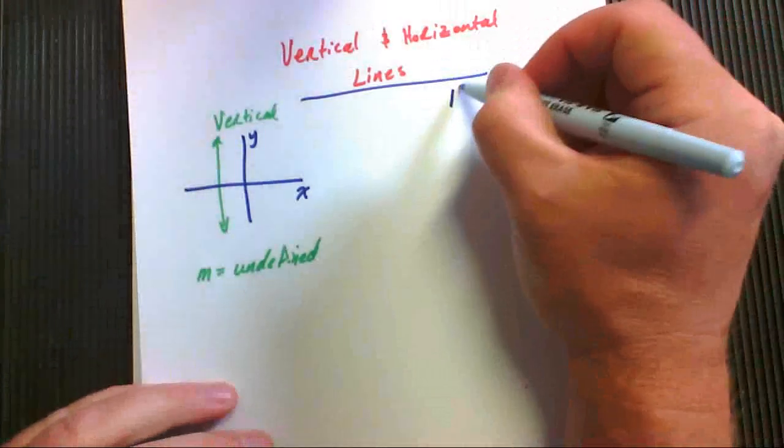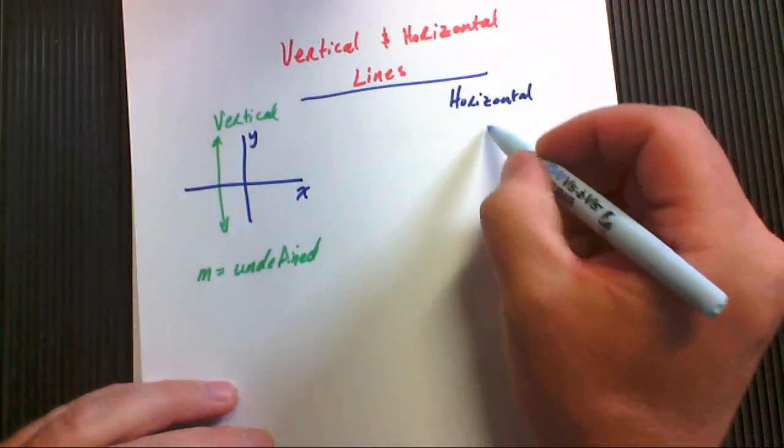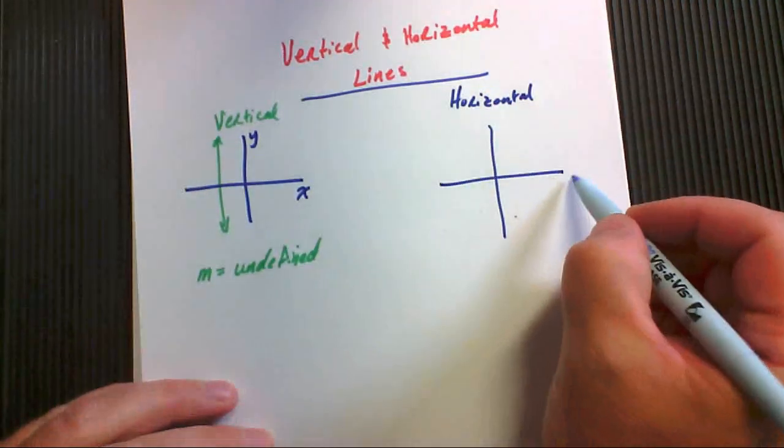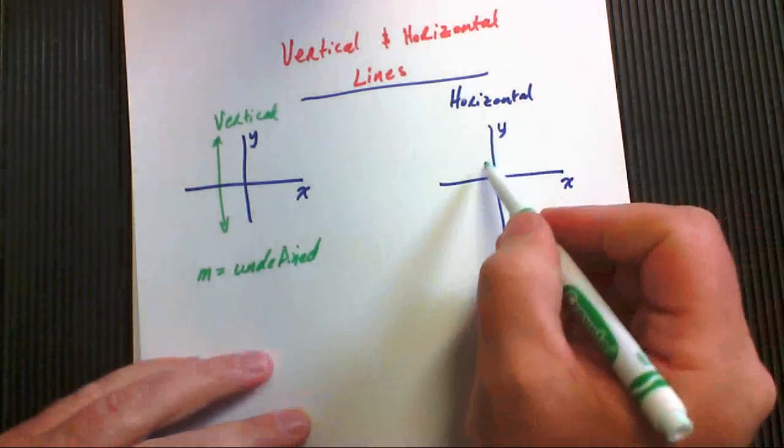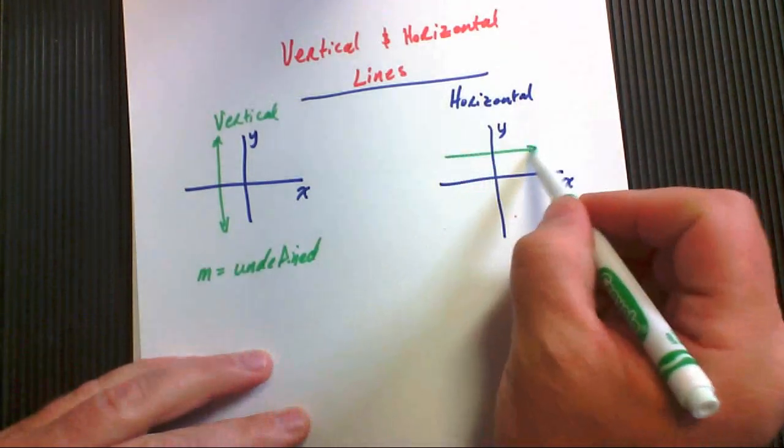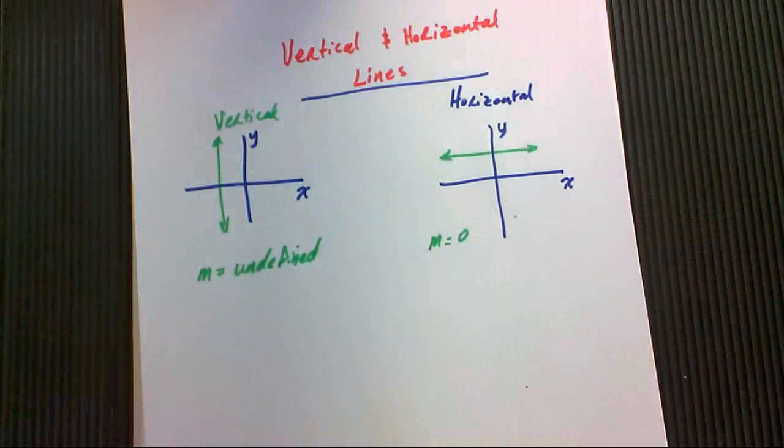Now, if you have a horizontal line, you have your y-axis and your x-axis, a horizontal line will look like this. And it will have a slope of zero, always. Alright.